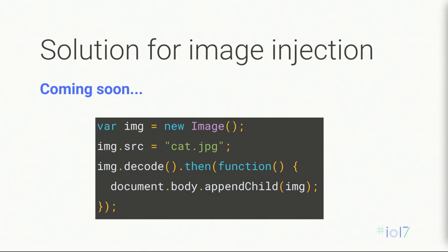The reason to use image.decode() instead of ImageBitmap is that this API does not pin the image resource in RAM — the decoded version is evictable. It's much friendlier under memory pressure. This is currently under development, not yet in the browser, but expect to see it soon as an experimental feature in Chrome.